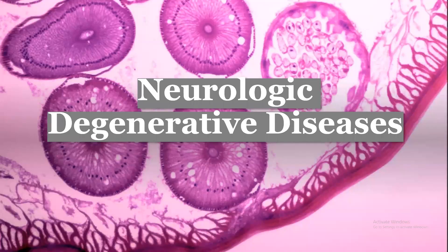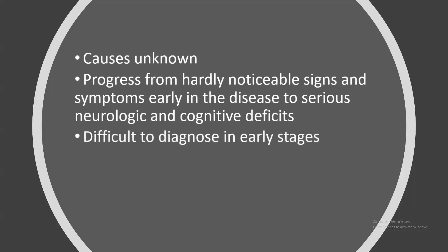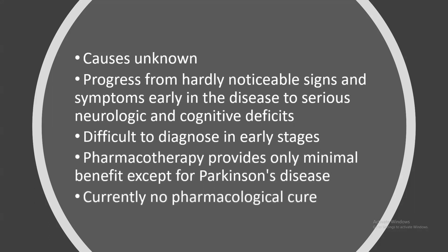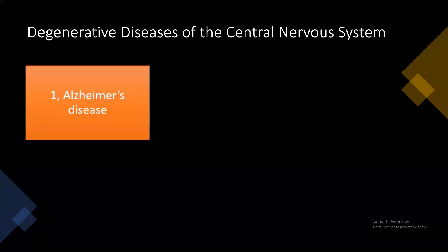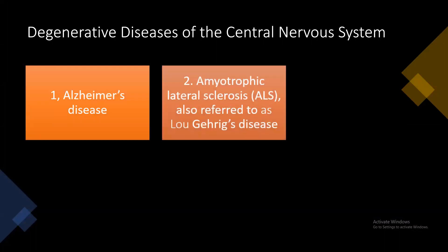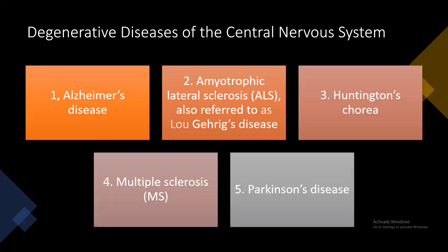Next are neurological degenerative diseases. The cause is unknown so far. These diseases progress from hardly noticeable signs and symptoms early on to serious neurological and cognitive deficits. They are difficult to diagnose in early stages, and pharmacotherapy provides only minimal benefit except for Parkinson's disease. Currently, there is no pharmacological cure. Degenerative diseases of the central nervous system include Alzheimer's disease, amyotrophic lateral sclerosis (Lou Gehrig's disease), Huntington's chorea, multiple sclerosis, and Parkinson's disease.